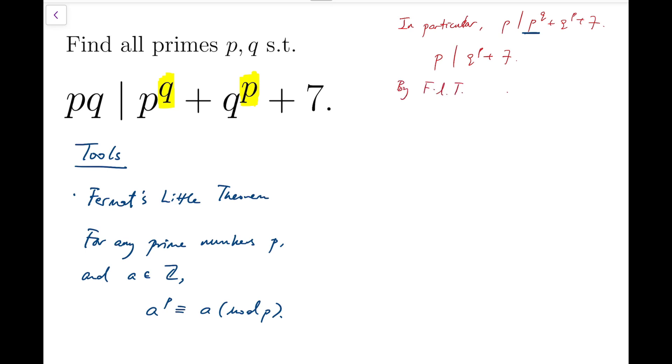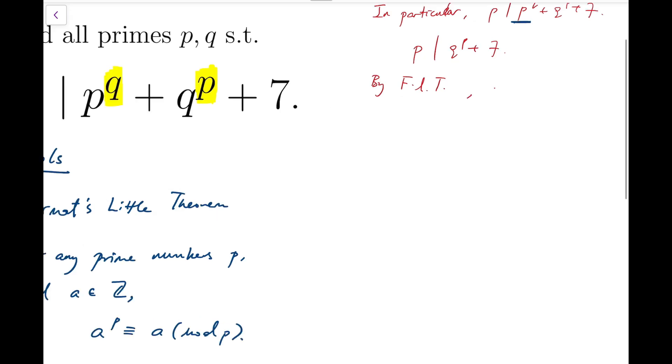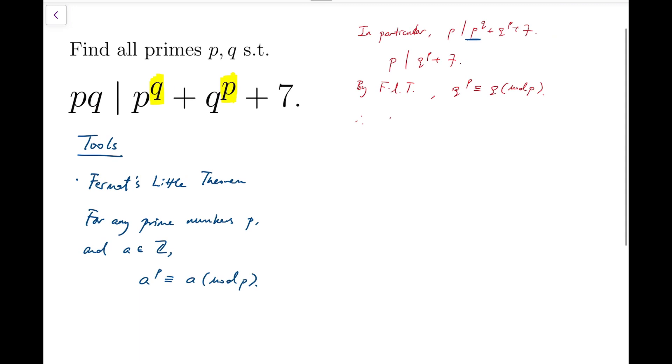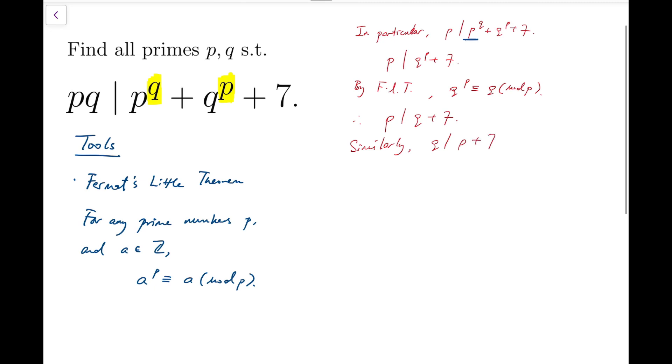But by the FLT, note that I'm writing the letter L in smaller case, because the capital letters FLT implies Fermat's Last Theorem. So q to the p is congruent to q mod p. Therefore, p divides q plus 7. And we can use a similar argument to say that q divides p plus 7.